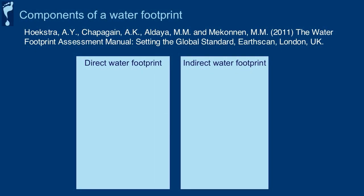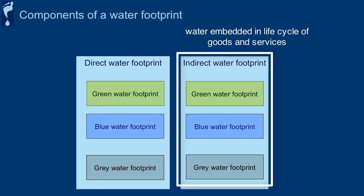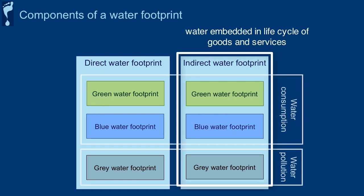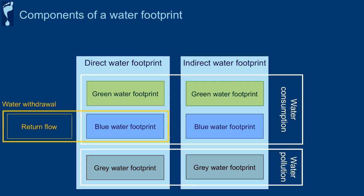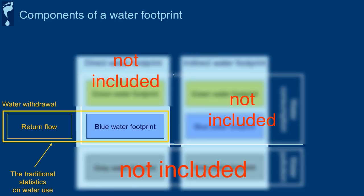For an individual, the water used to create a product is used indirectly, and the water footprint tool accounts for both direct use and indirect use. An example of direct water use would be the water you use each day for cooking, cleaning, and sanitation. The indirect use is associated with the embedded water in goods and services that you use. Traditional measures of water use are also shown on this slide; note that they do not account for the systemic use of water, nor do they account for pollutants.